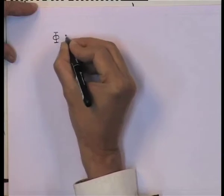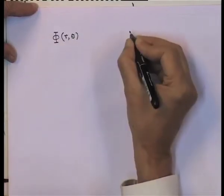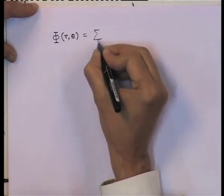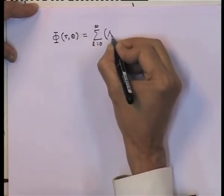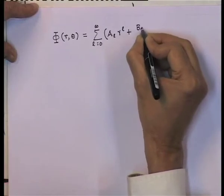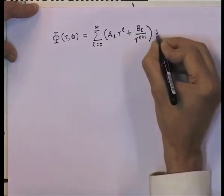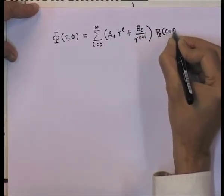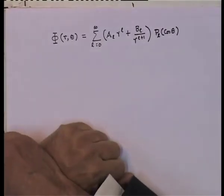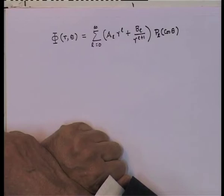What we tried to do last time is to specialize to the case where there is azimuthal symmetry. Azimuthal symmetry simply implies that the solutions do not have phi dependence — azimuthal angle dependence. In such a case, the potential phi, which depends only upon the radial distance r and the polar angle theta, is given by a sum over l from 0 to infinity of a_l r to the power l plus b_l over r to the power l plus 1 times the Legendre polynomial P_l of cos theta. We had also seen that P_l of cos theta are polynomials in cos theta of degree l, with P_0 defined to be equal to 1.